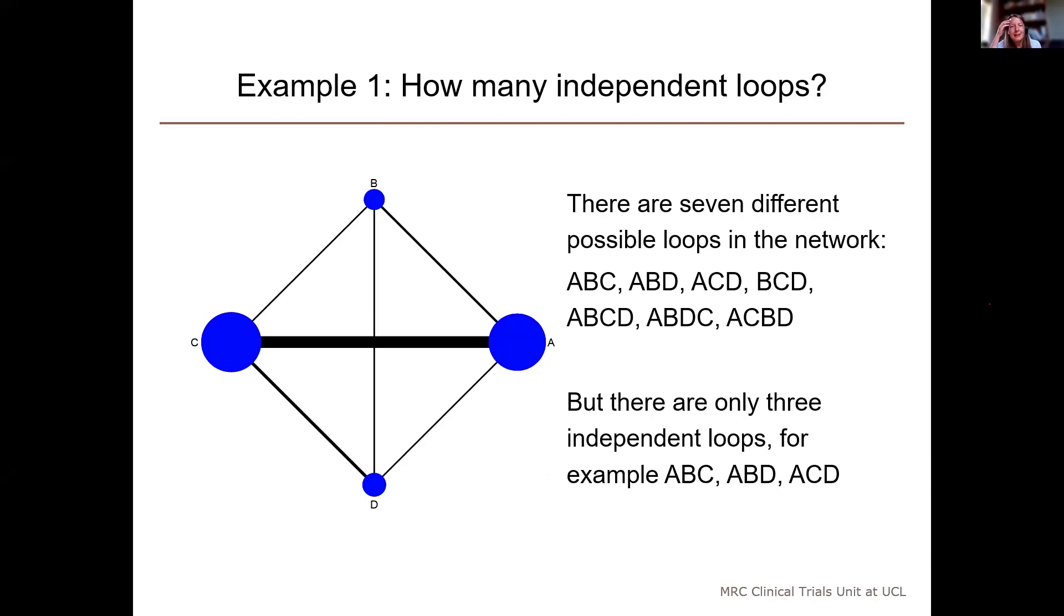There are seven different possible loops in the network, so the answer 7 does make sense as well. But there are only three of these which are independent. We can work that out by finding out that if we take away three edges, we can get rid of all the loops in the network.